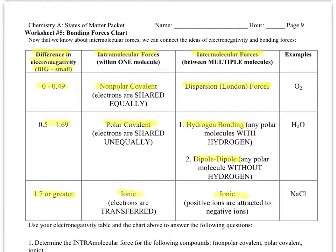This is worksheet 5 of the states of matter packet. In this worksheet we're going to put together what we know about electronegativity and the electronegativity chart with what we learned about the three types of intermolecular forces in this packet.